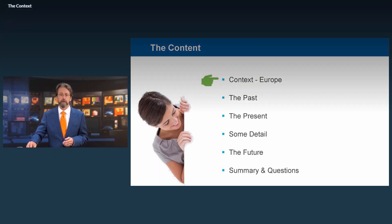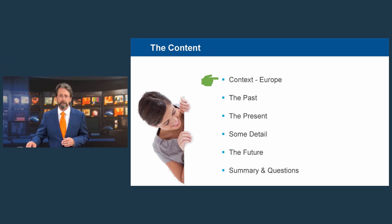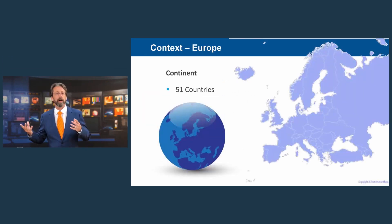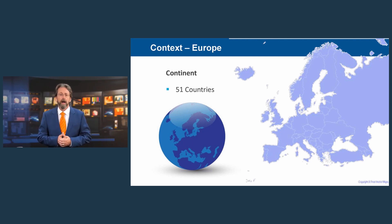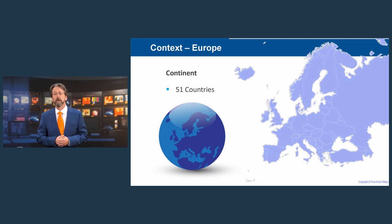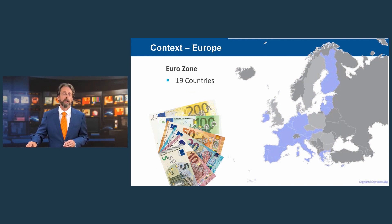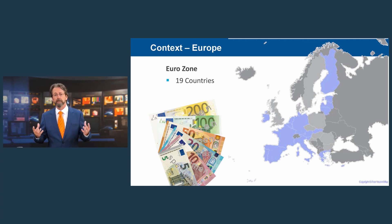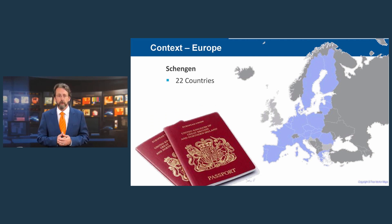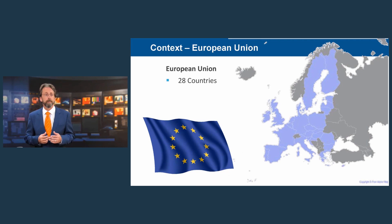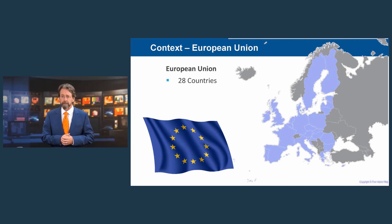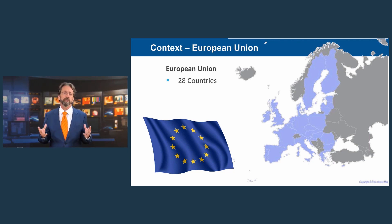Let's get started by giving you some context — context about Europe mainly. When I talk about Europe, do I talk about a continent of 50 or 51 countries? Or the Eurozone containing 19 countries? Or Schengen, with 22 countries without shared borders? No, I'm talking about the European Union — 28 countries — a unique economic and political union between 28 countries that cover most of the continent.